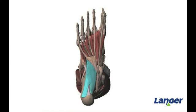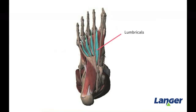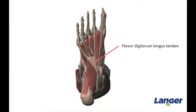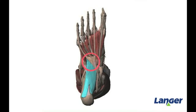The second layer within the plantar group has two muscles in total: the quadratus plantae and the lumbricals. The quadratus plantae has two heads which originate on the medial and lateral side of the calcaneus. The muscle inserts onto the lateral side of the flexor digitorum longus tendon and helps the tendon to flex the toes.